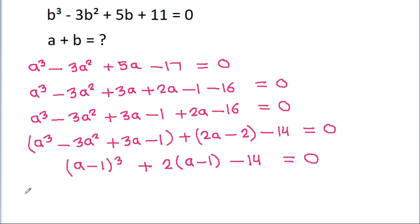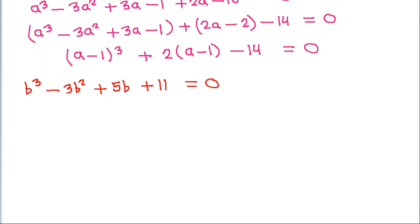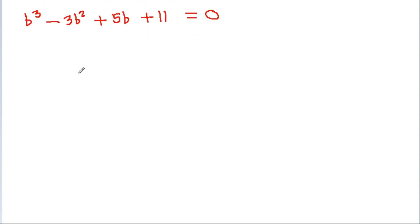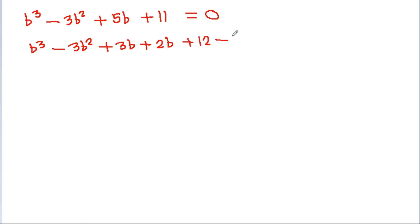Similarly, we have b cubed minus 3b squared plus 5b minus 11 equals 0. We rearrange: splitting terms and grouping to identify a perfect cube pattern.